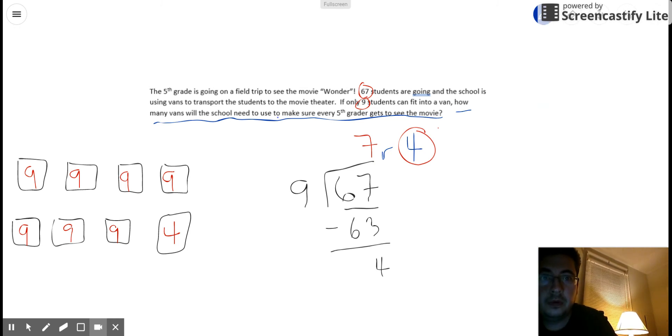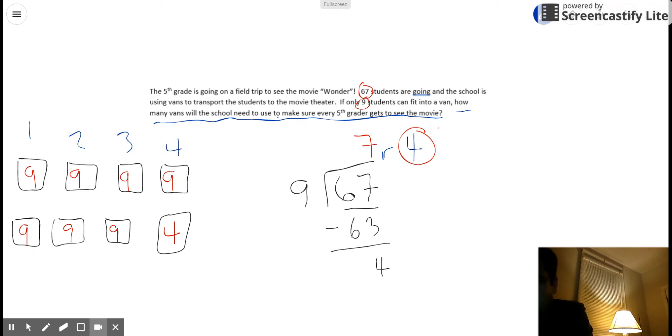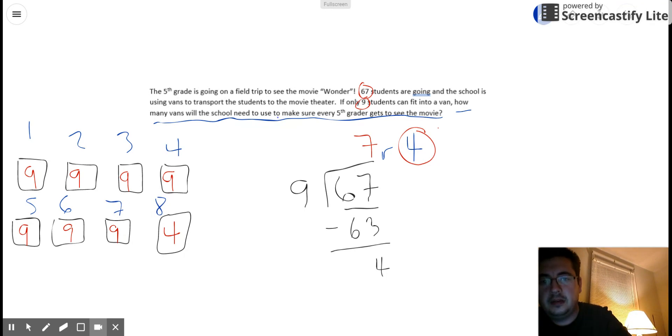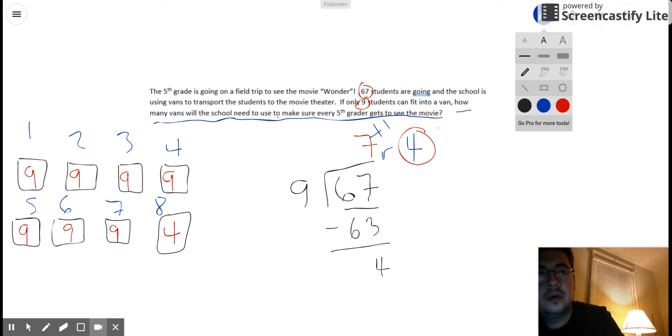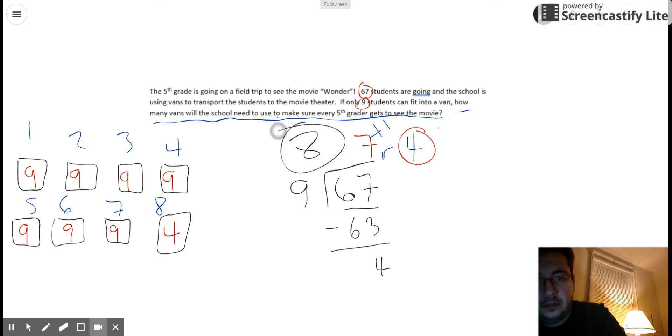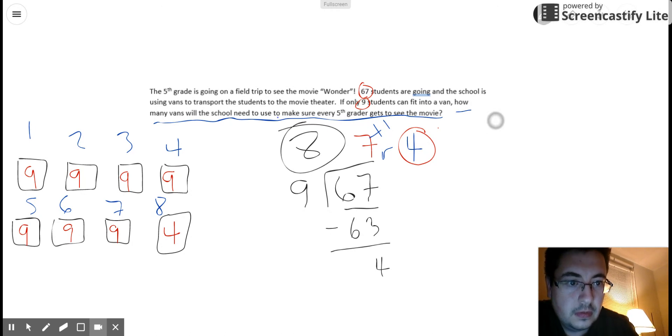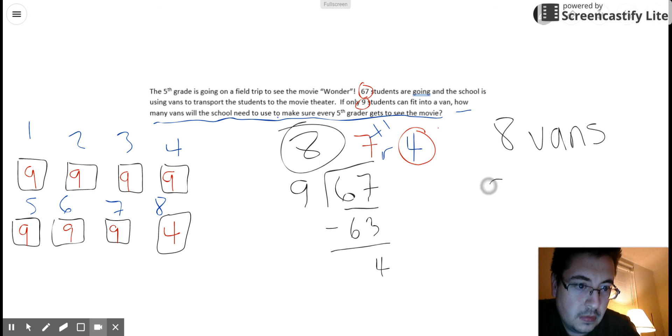Well, I simply have to count the number of vans in my diagram or my picture here. So I have 1, 2, 3, 4, 5, 6, 7, 8 vans. Or I can look at my division problem, 67 divided by 9. And I can round up my 7. So I'm going to round up the quotient. And I'm going to just add 1 to my quotient. And so 7 plus 1 is going to be equal to 8. And so the answer to this question is 8 vans are needed.